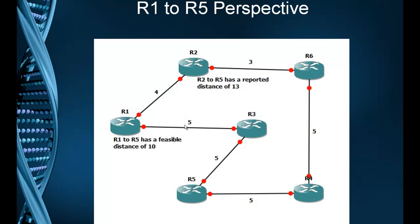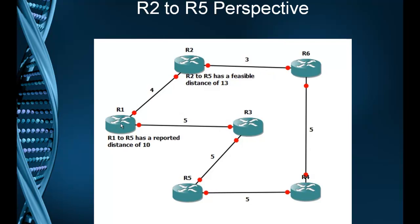It's always a matter of perspective. When you look at these things, you have to remember where you're looking from. In the first example we looked at it from R1's point of view. But if we change and look at it from R2's point of view, R2's best path has a feasible distance of 13 going to R6 to R4 to R5. R2 has a reported distance of 10 from R1. R2 can't go R1, R3, R5 because then his distance would be 14.